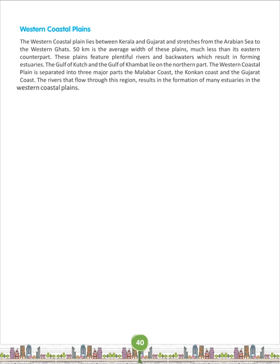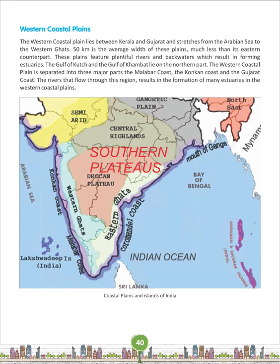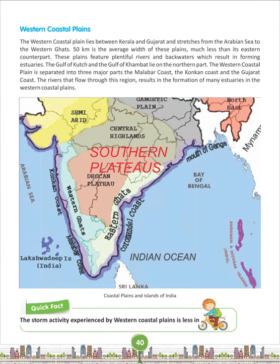The three major parts are the Malabar coast, the Konkan coast, and the Gujarat coast. The rivers that flow through this region result in the formation of many estuaries in the western coastal plains. The storm activity experienced by western coastal plains is less in comparison to the eastern coastal plains.